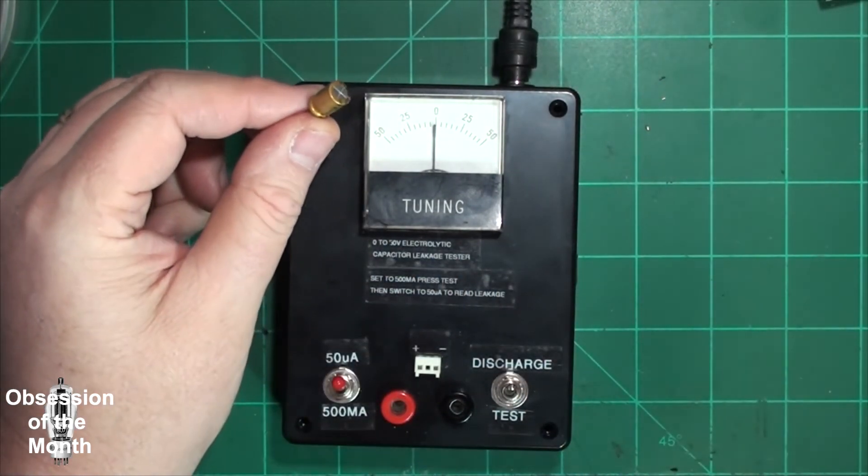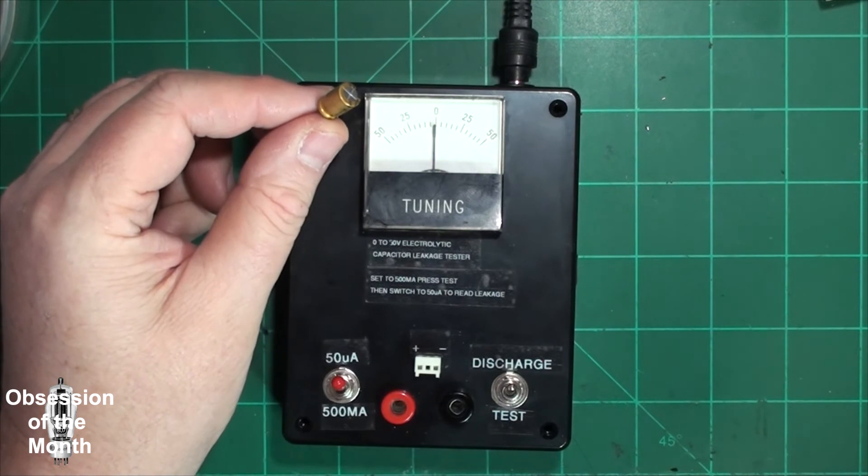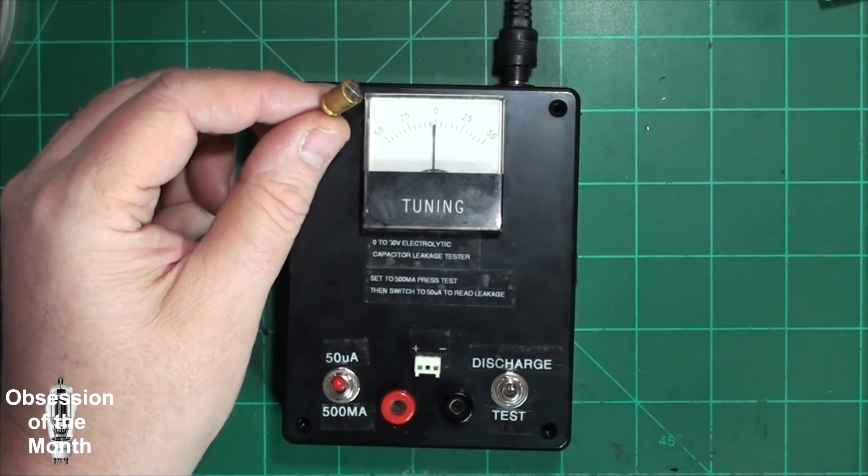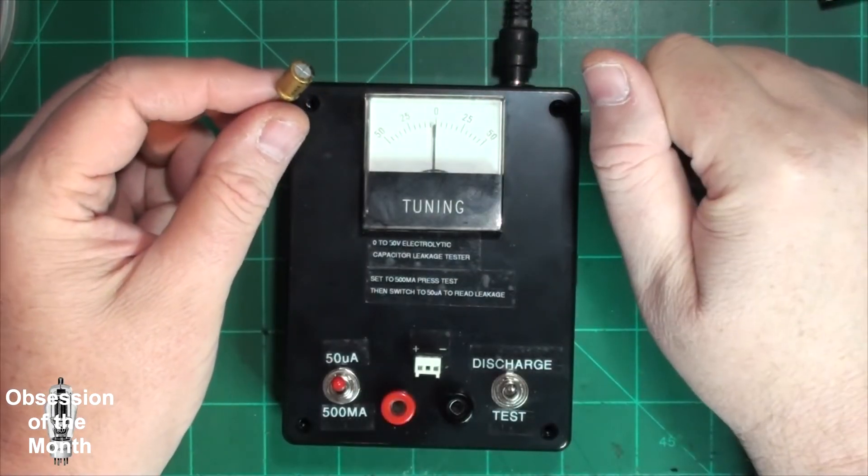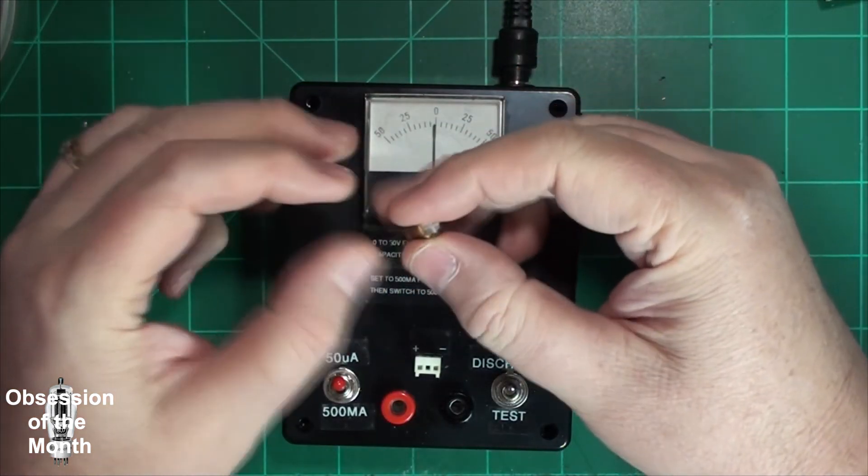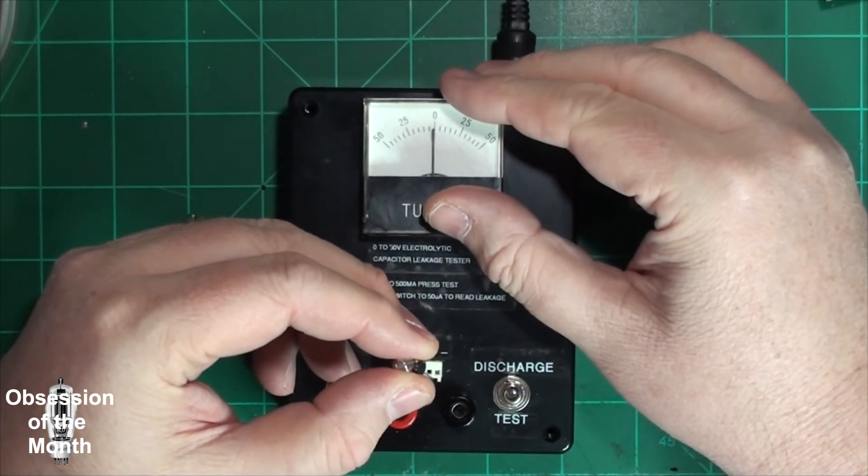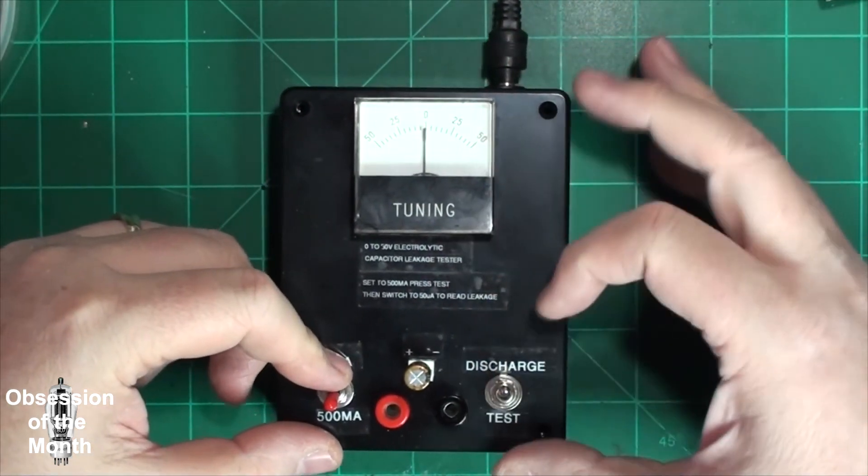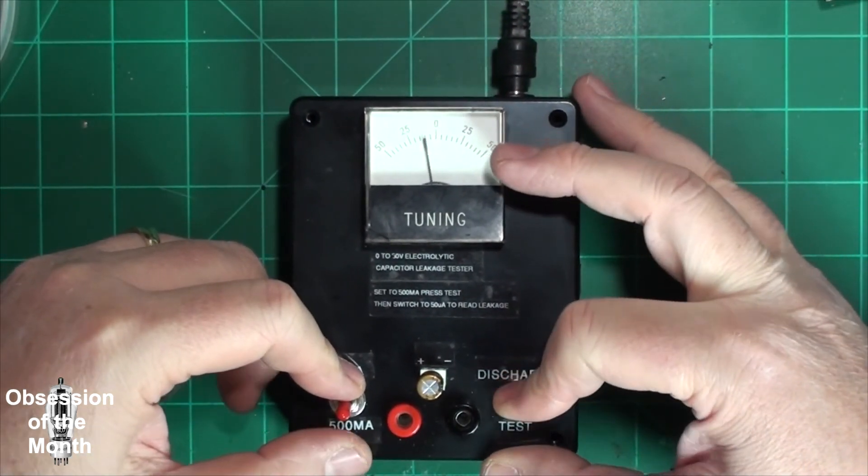So I'm going to turn my voltage down to about 20, yeah, 24 volts. Put it in. Switch to the 500 microfarads, and hit test.